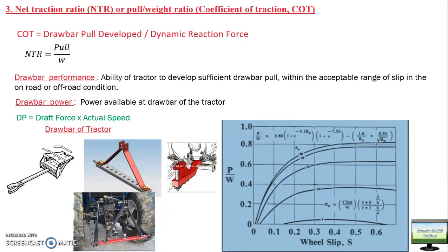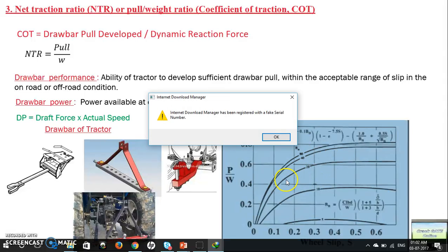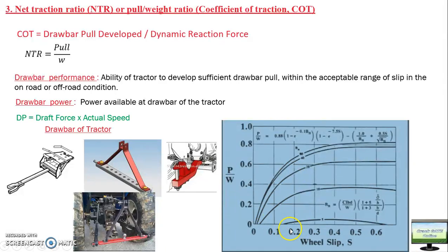How does draw bar pull vary with respect to slip? On the x-axis is real slip, and on the y-axis is pull by weight ratio or coefficient of traction. For any given mobility number — for example, BN = 20 — once you start increasing slip, your pull by weight ratio starts increasing because your weight is constant, so pull is increasing. This CoT will start increasing, attain a maximum peak value at some particular slip, and after that it will become constant or flat.